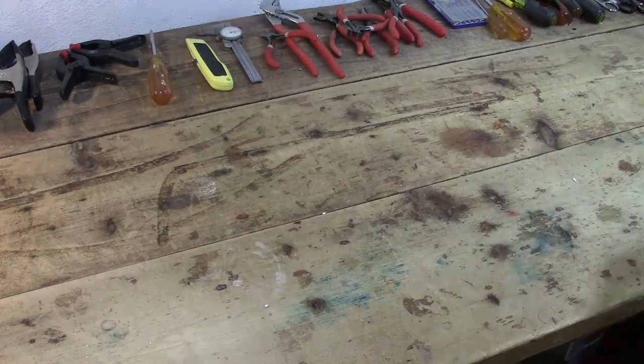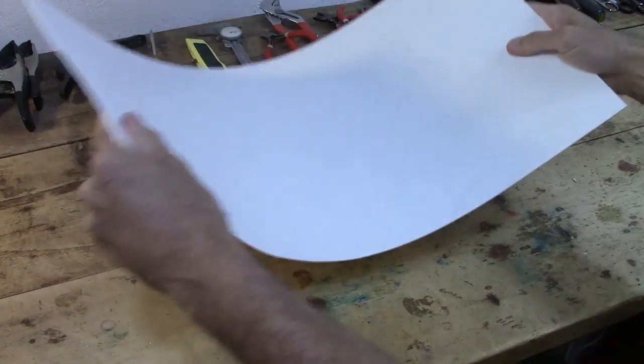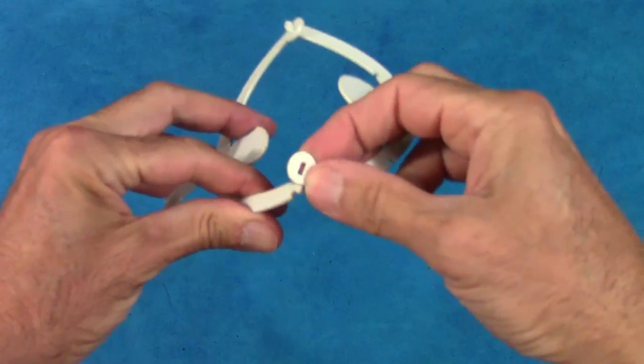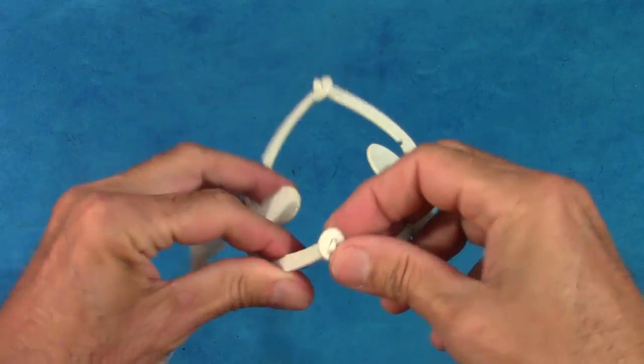I was given some scrap ABS plastic and I wanted to create something that takes advantage of the fact that it's flexible. So I designed these joints where you twist the end of one arm or leg to connect it to the end of another.